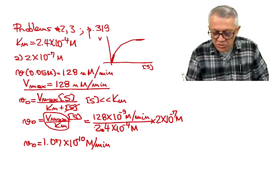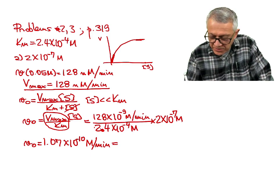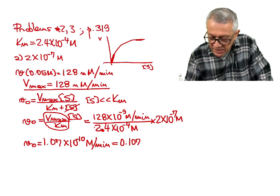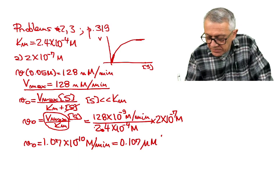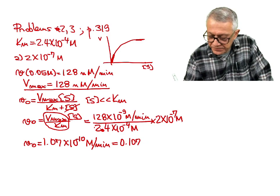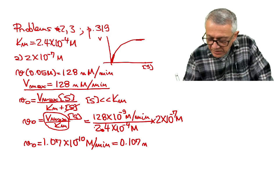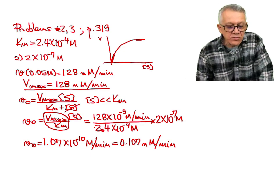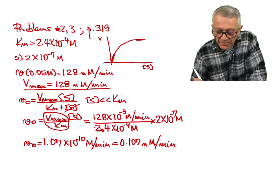We can also express this as 107 times 10 to the minus 9, which is 107 nanomolar per minute. That is the solution for part A of the problem.